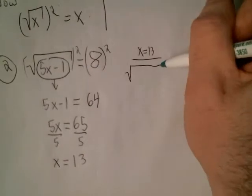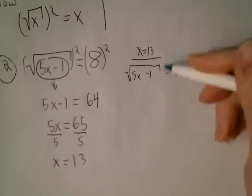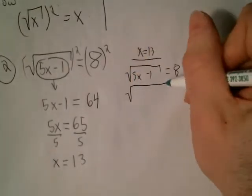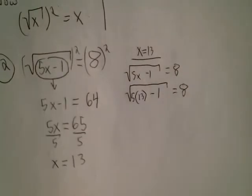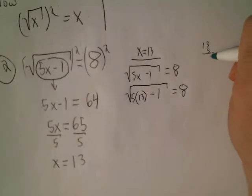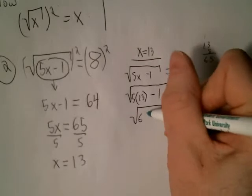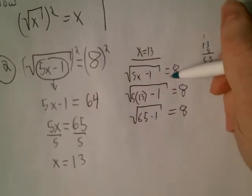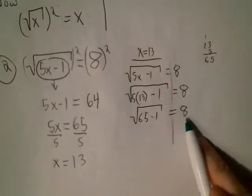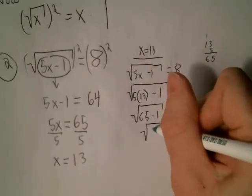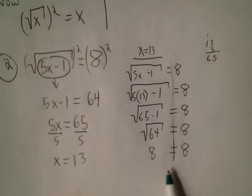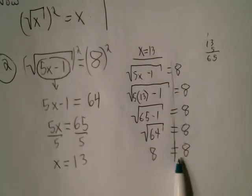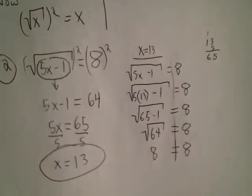The original was square root of 5x minus 1 equals 8. Replace x with 13. You need written documentation that you're doing the check. So 5 times 13 is 65 — square root of 65 minus 1. This is not solving; you're just making sure this side equals that side. Simplifying gives square root of 64, and the square root of 64 is just 8. Since 8 equals 8, that's a true statement, meaning x equals 13 is our answer.